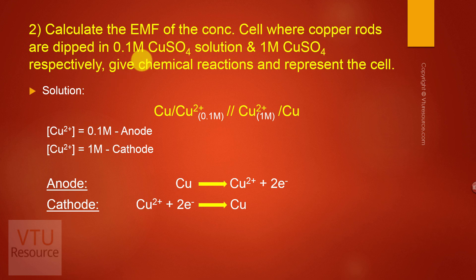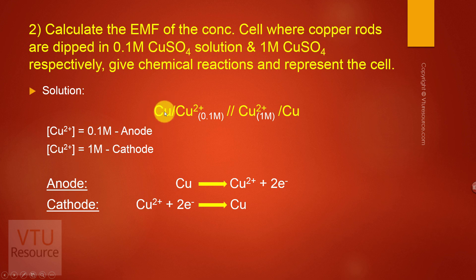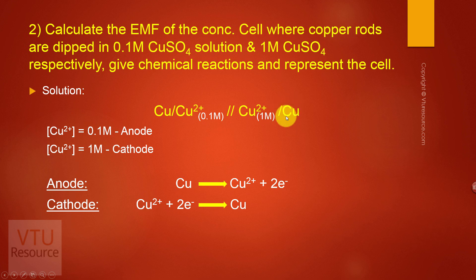Write down the given data: Cu²⁺ concentration is 0.1 M — lower concentration, acts as anode. Cu²⁺ concentration is 1 M — higher concentration, acts as cathode. The cell representation is: Cu | Cu²⁺ (0.1 M) || Cu²⁺ (1 M) | Cu. Left-hand side of the salt bridge is anode, right-hand side is cathode.